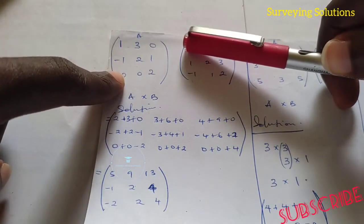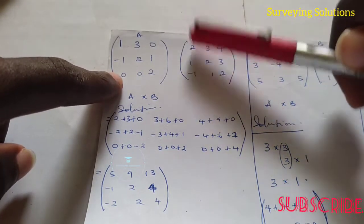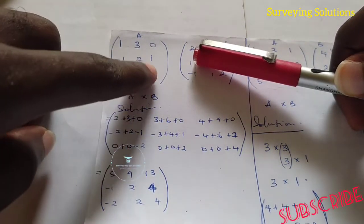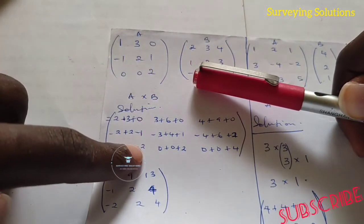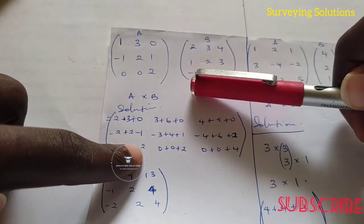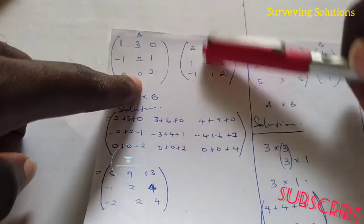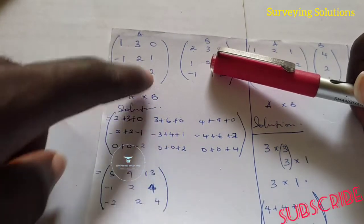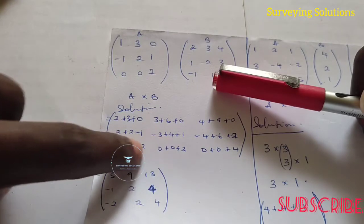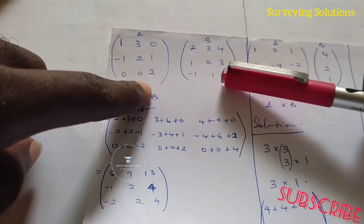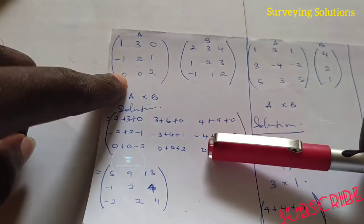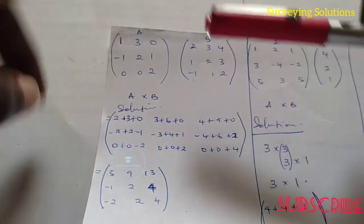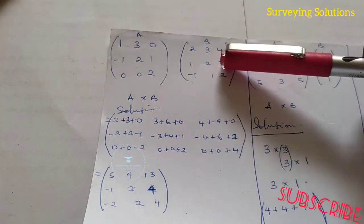Now the third row of matrix A multiplies all columns. First column: 0×2 = 0, plus 0×1 = 0, plus 2×(−1) = −2. Second column: 0×3 = 0, plus 0×2 = 0, plus 2×1 = 2. Third column: 0×4 = 0, plus 0×3 = 0, plus 2×2 = 4. Matrix A has completely multiplied matrix B using the row by column method.